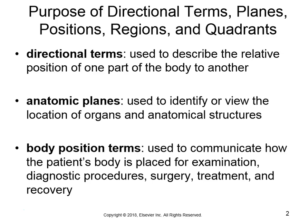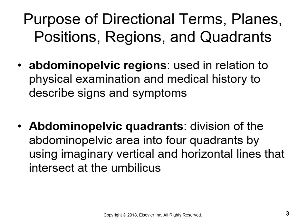To break it down: directional terms describe where one body part is relative to another. An anatomic plane uses imaginary lines that cut through the body to identify certain structures — used a lot in diagnostic scan procedures. Body positions communicate how a patient needs to be situated for different procedures, treatments, or recovery. And finally, the abdominopelvic section can be broken into nine different regions or, if you want larger divisions, into four quadrants. We'll show you both.